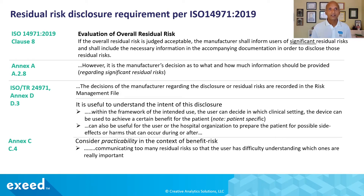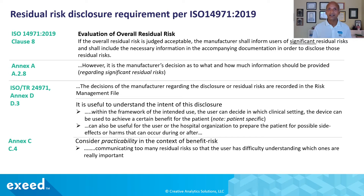Most importantly, in Annex C C.4, consider practicability in the context of benefit-risk. Communicating too many residual risks so that the user has difficulty understanding which ones are really important is not a good thing — you should not be communicating everything. Imagine trying to fly a plane where the dashboard is so complex you cannot understand the signals you are getting and take the right action at the right time. You have to be judicious and smart about what you disclose and how you disclose. That's what ISO is telling you.